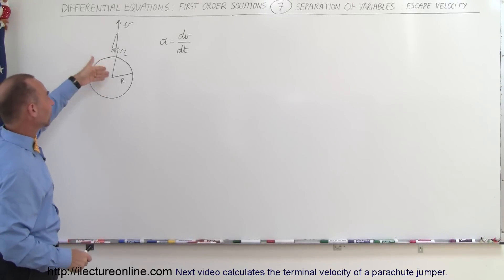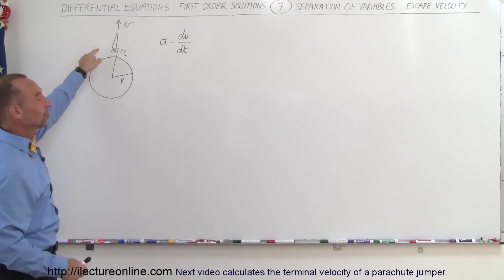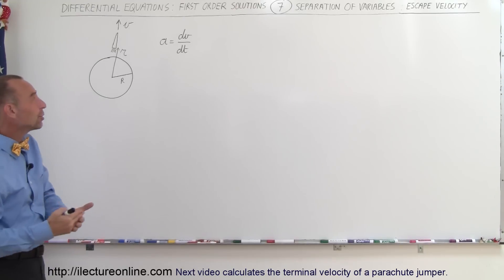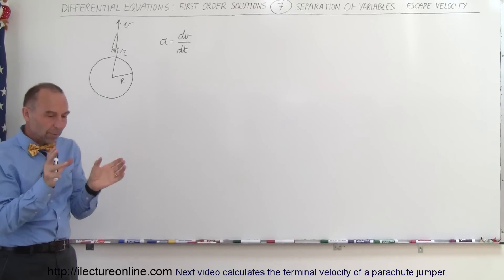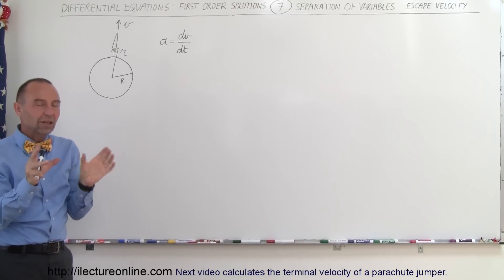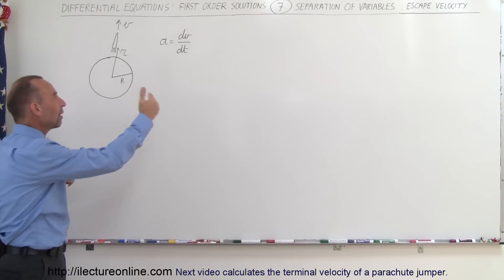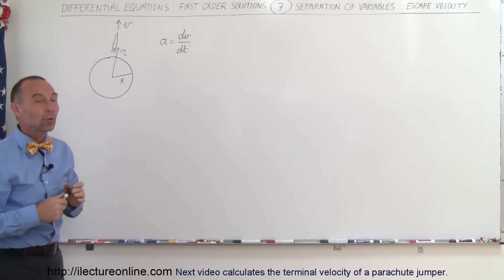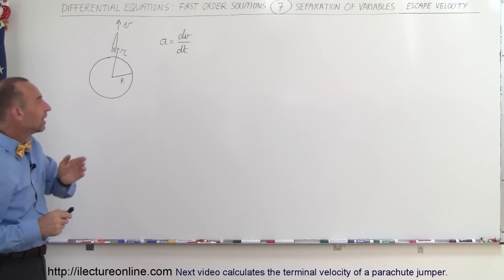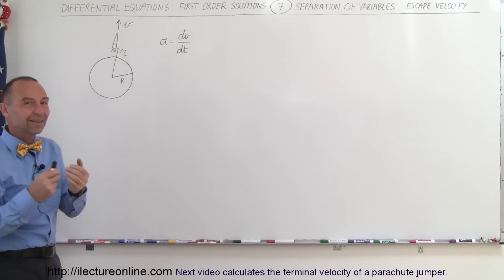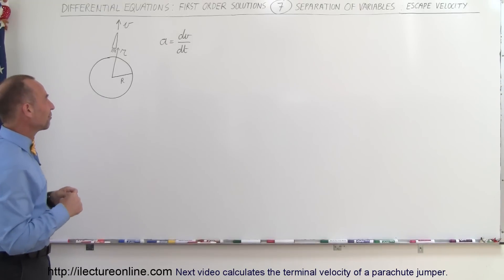When some rocket blasts off from the Earth, it has to have a certain amount of velocity in order to get away from the Earth. What we want to do here is come up with an equation that describes the velocity as a function of distance away from the Earth. The velocity it has initially should be at least the minimum — the escape velocity — to get away from the Earth.